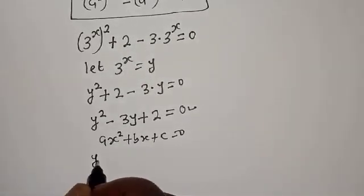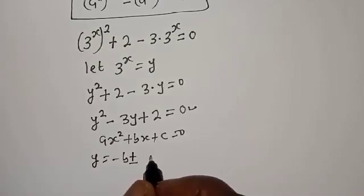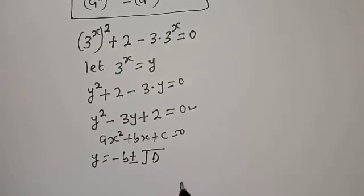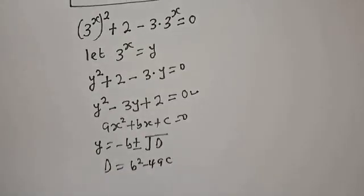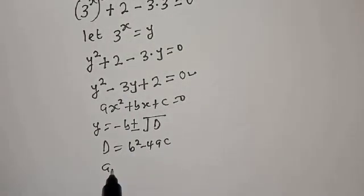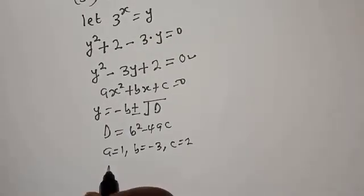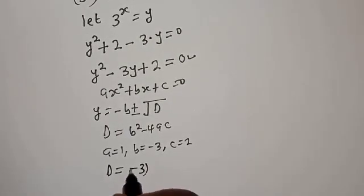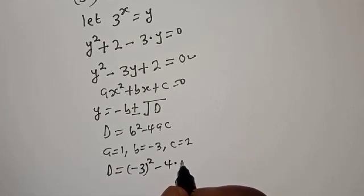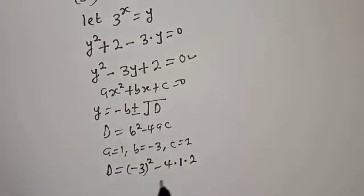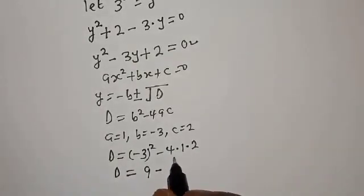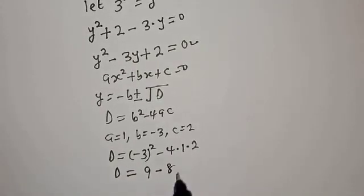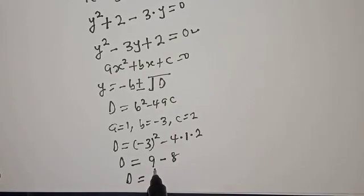From the quadratic general formula, for ax squared plus bx plus c equals 0, we have y equal to negative b plus or minus square root of the discriminant d, where d equals b squared minus 4ac. From this equation, a equals 1, b equals negative 3, c equals 2. So d equals negative 3 squared minus 4 times 1 times 2, giving d equals 9 minus 8 equals 1.